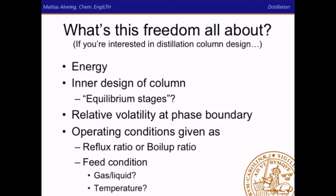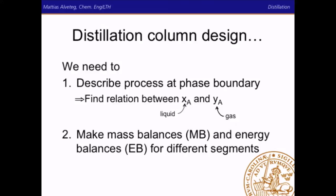To do distillation column design, we need to first describe the process at the phase boundary — that is, we need to find a relation between the molar composition of the liquid phase and the molar composition of the gas phase. And secondly, we need to make mass balances and energy balances for different segments. We start by looking at the phase boundary.